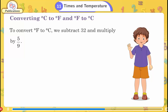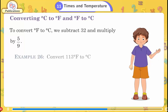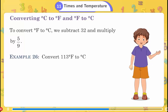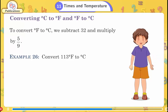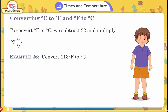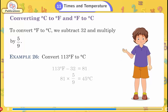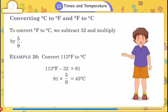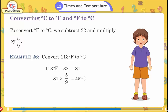To convert degree Fahrenheit to degree Celsius, subtract 32 and multiply by 5/9. Example 26: Convert 113°F to Celsius. 113 − 32 = 81; 81 × 5/9 = 45°C. Answer: 113°F = 45°C.